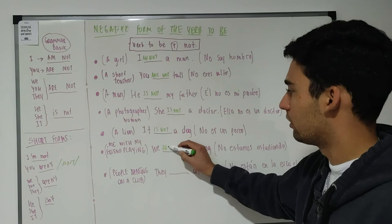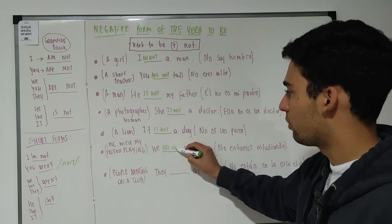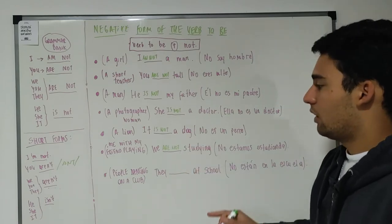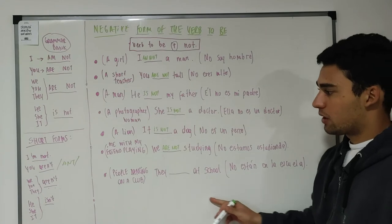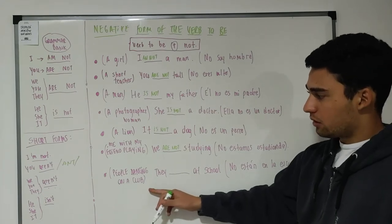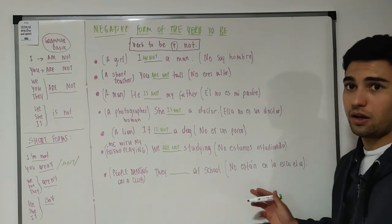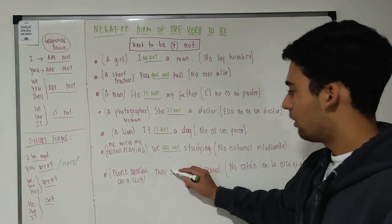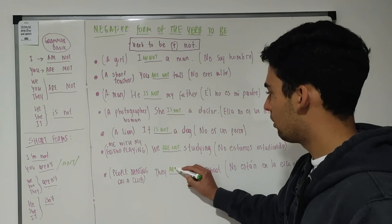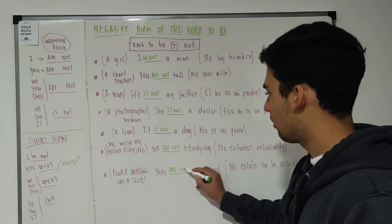And last example says people dancing on a club. They are not at school. They are not at school, no están en la escuela, están bailando. They are not at school.